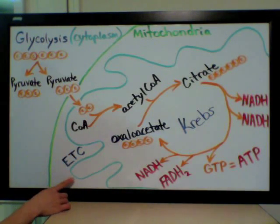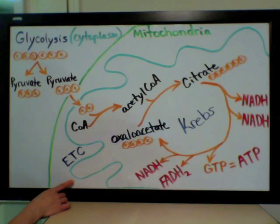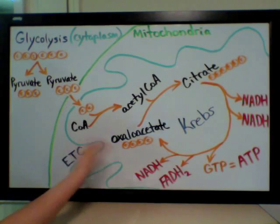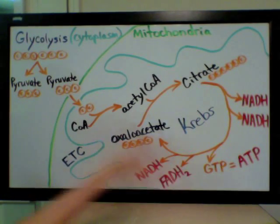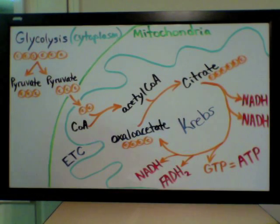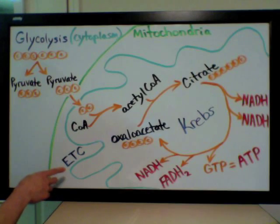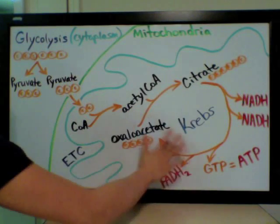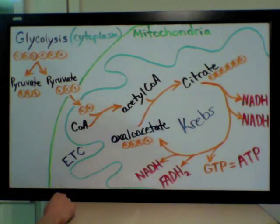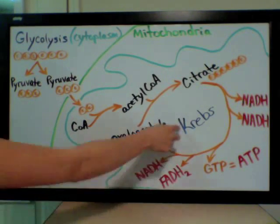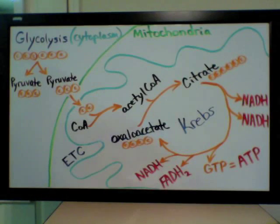That membrane is the inner mitochondrial membrane, which is extensively folded for increased surface area. The mitochondria has an outer membrane and an inner membrane, and the matrix is all of the fluid within the inner membrane where the Krebs cycle occurs.